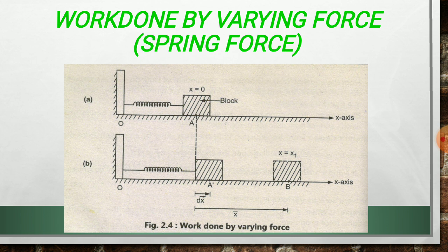First one is when theta is equal to 0 degree. Then work done W is equal to Fs. That is, work done is positive quantity. Second case, when theta is equal to 90, then cos 90 is equal to 0. Therefore, work done is equal to 0.